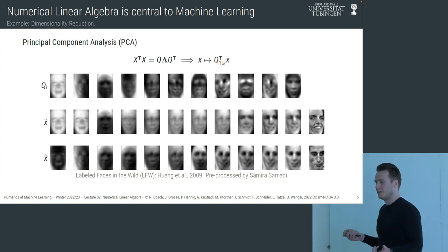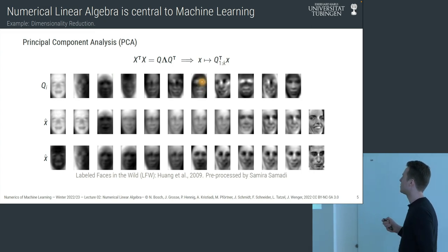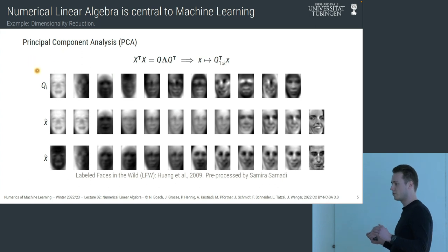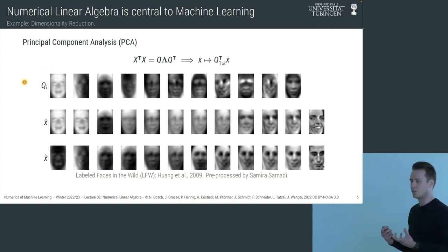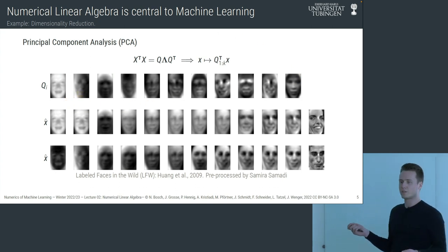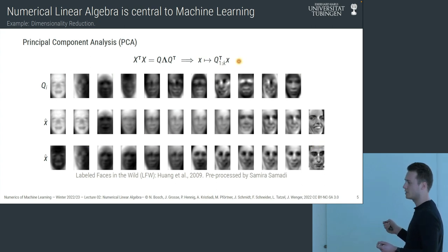PCA essentially performs dimensionality reduction: it takes a high-dimensional dataset and finds a linear subspace — a lower-dimensional vector space — to embed the data in, while still capturing a lot of structure. Here it's being applied to pictures of faces, treating images as vectors, and reconstructing them with successively more elements from that lower-dimensional subspace.